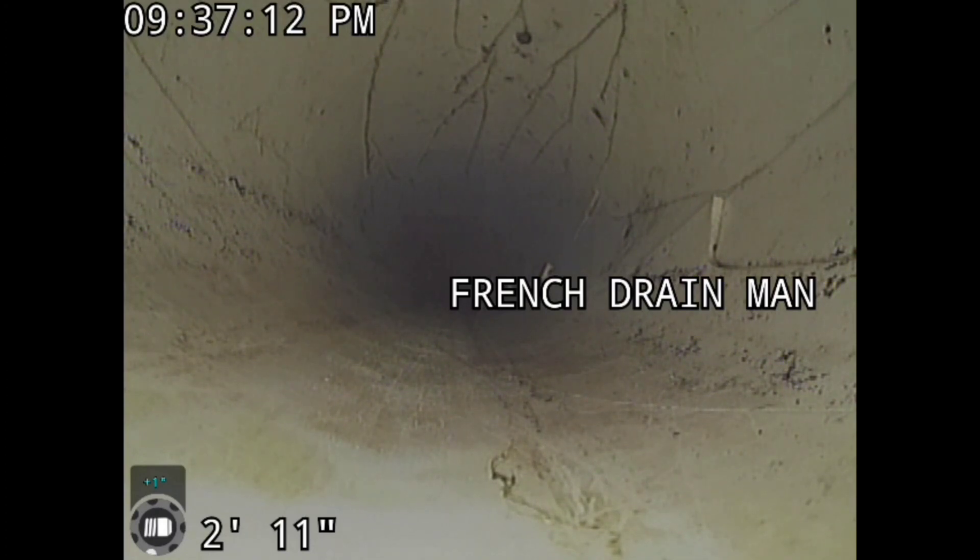We're going to have to tear this downspout out. We're going to have to run it in corrugated pipe. It's a gravity drain for a downspout. It's in the frost.